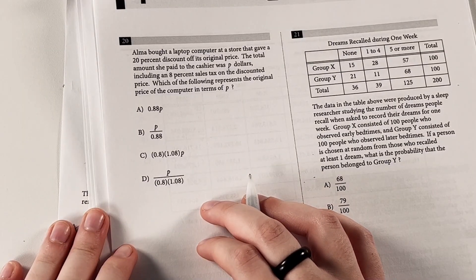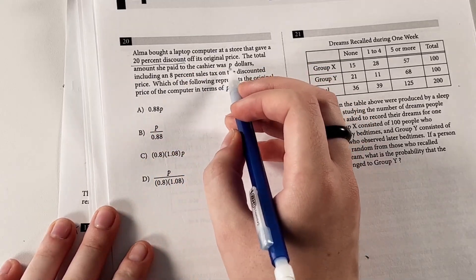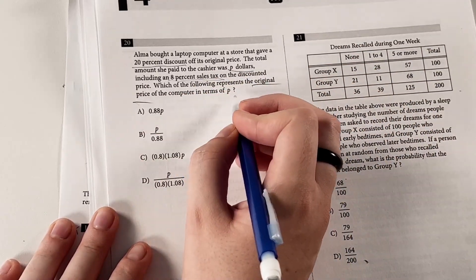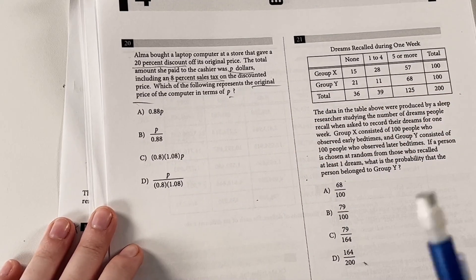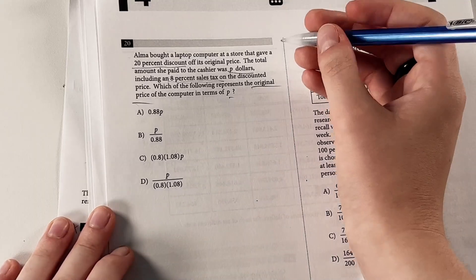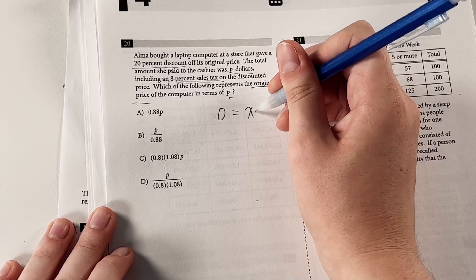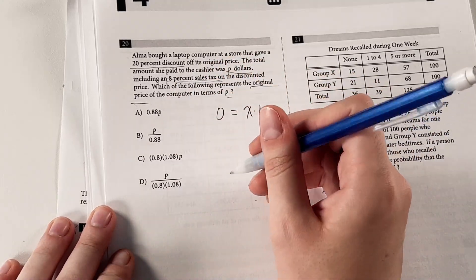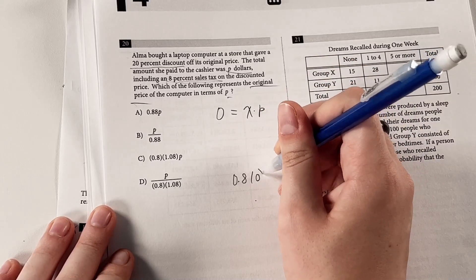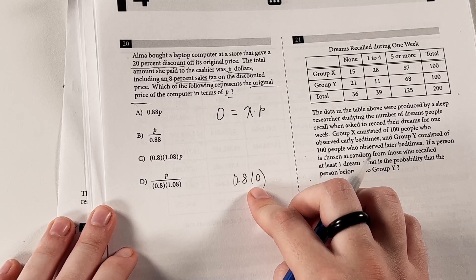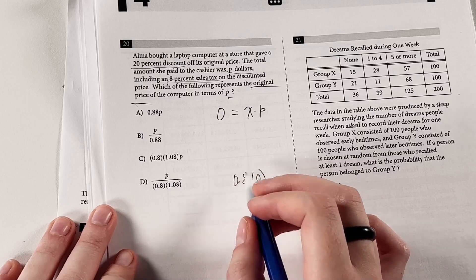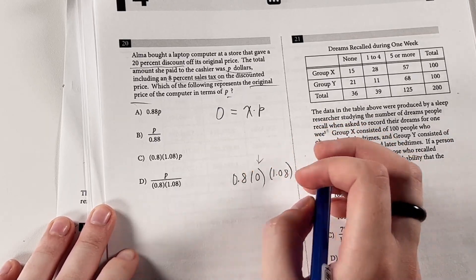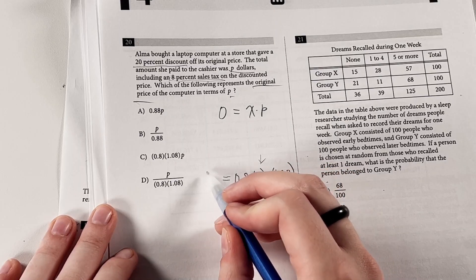Alma bought a laptop computer at a store that gave a 20% discount off its original price. The total amount she paid to the cashier was P dollars, including an 8% sales tax on the discounted price. Which of the following represents the original price of the computer in terms of P? So this is a lot of transactions to think about. They kind of load a lot of information on us here. So we're looking for the original price in terms of P. So we'll say like X times P. So just remember at the end, we're looking for O, not P. So if there was a 20% discount off its original price, O, that would look like it's 0.8 times the original price. It's going to be the amount without sales tax. She also paid an 8% sales tax on this discounted price. So we would also have to multiply 1.08 because that's going to add to the price. So this is not a 0, by the way. That's a confusing variable to use. So this is the amount that she paid to the cashier.